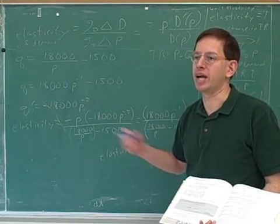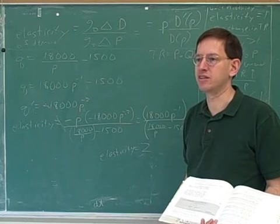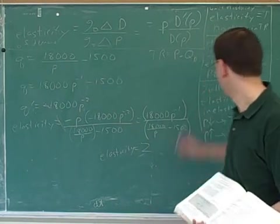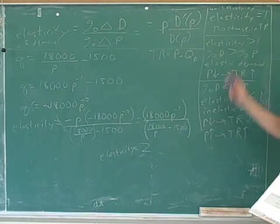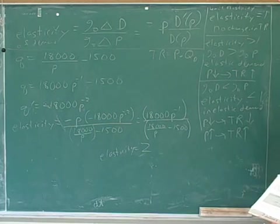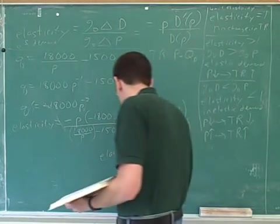Well, big and small relative to what? What number do we compare the elasticities to? One. One. Yeah. So we're comparing the elasticities to the number one. When it's big relative to one, it's elastic. And when it's small relative to one, it's inelastic. So this is elastic demand.